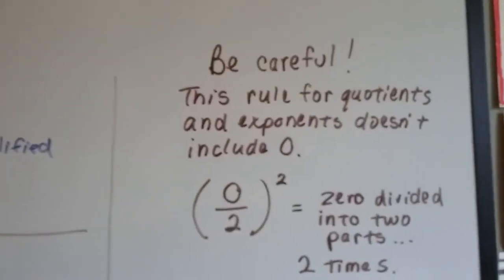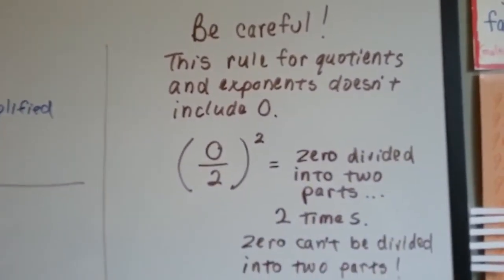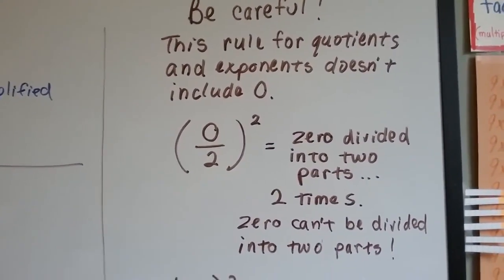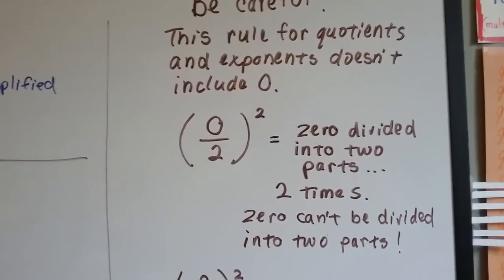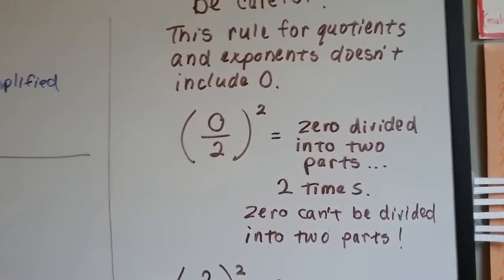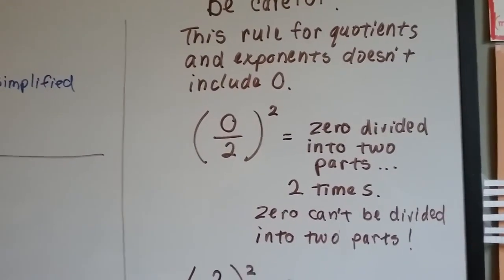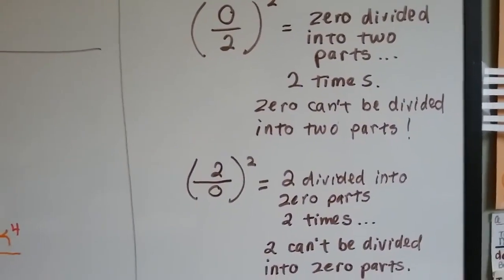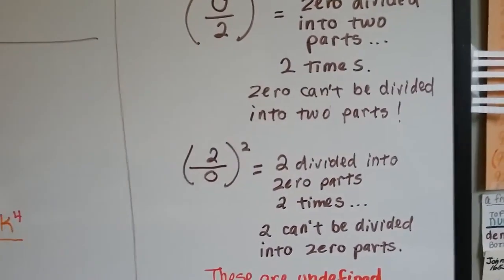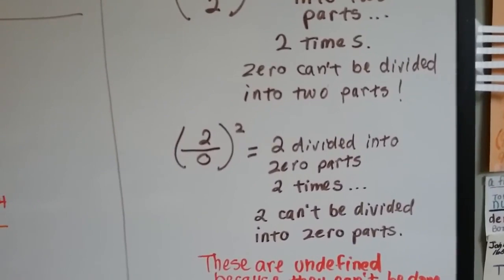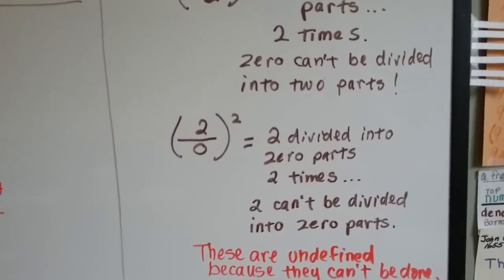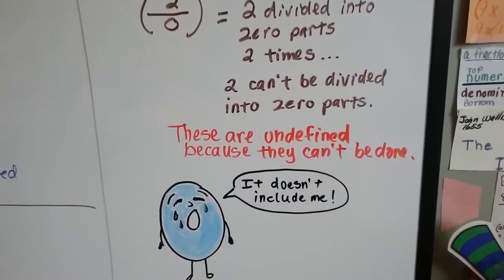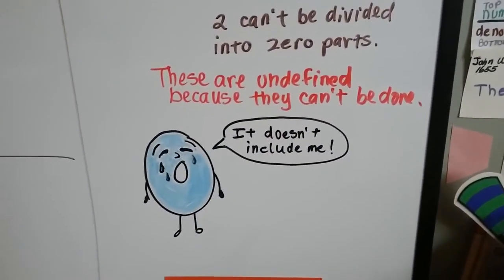This rule for quotients and exponents doesn't include 0. If we've got 0 over 2, raised to the second power, this means 0 divided into 2 parts 2 times. And 0 can't be divided into 2 parts. That's undefined. And if we have the 2 on the top as the numerator divided by 0, raised to the second power, that's 2 divided into 0 parts 2 times. 2 can't be divided into 0 parts. These are undefined because they can't be done. It doesn't include the 0.